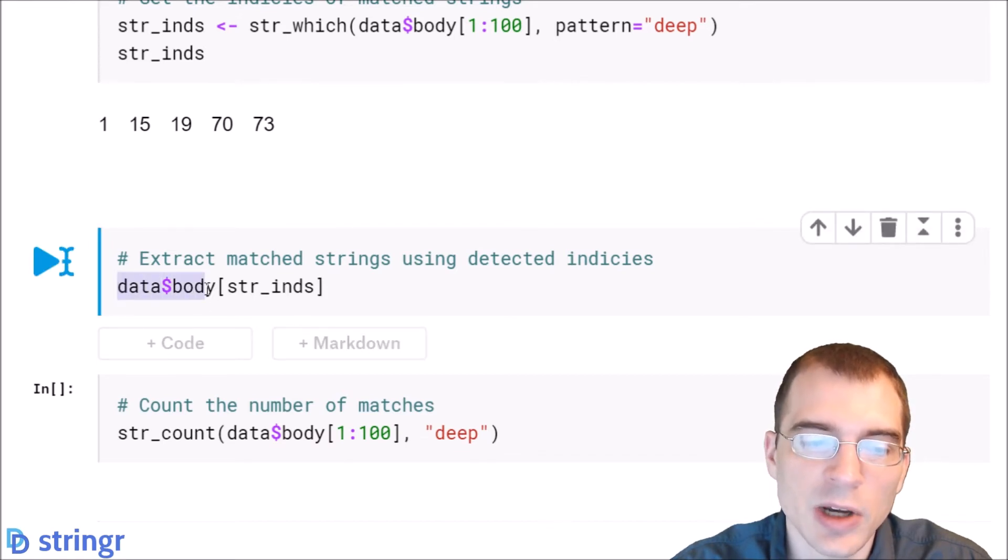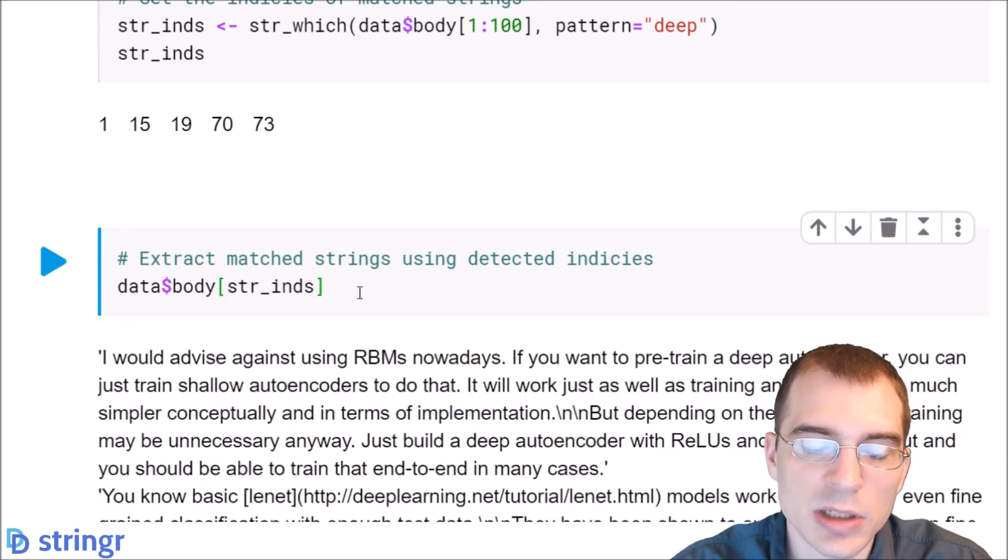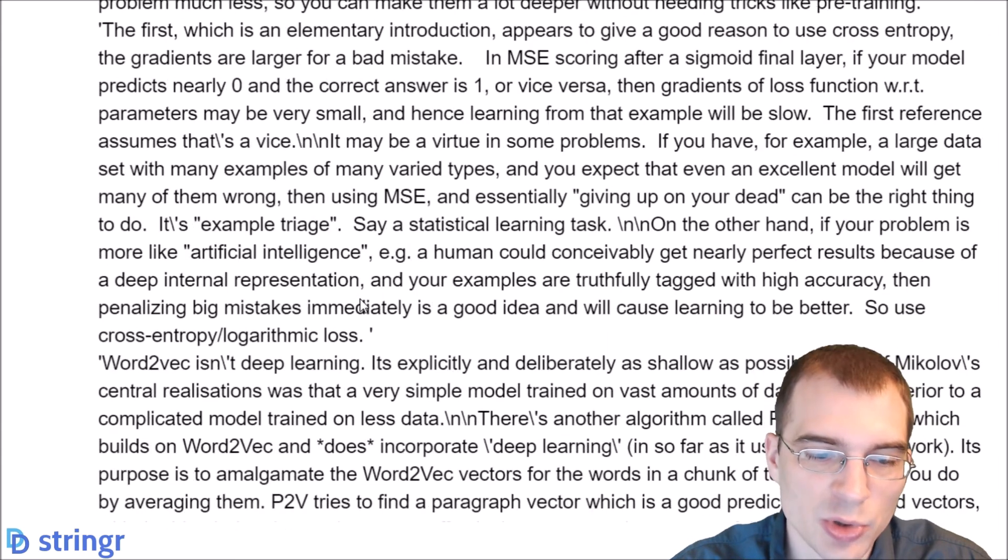So if we take the vector of the body of the posts and use those indices, we can extract each of those posts. And it seems some of the posts were pretty long.